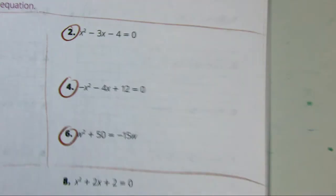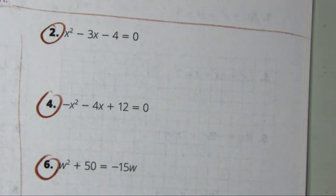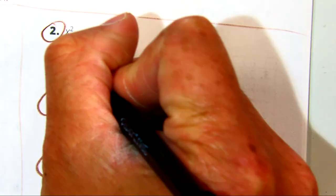2. 2? Yeah. Alright, what'd you do? Factors. The numbers would be negative 4 and 1.